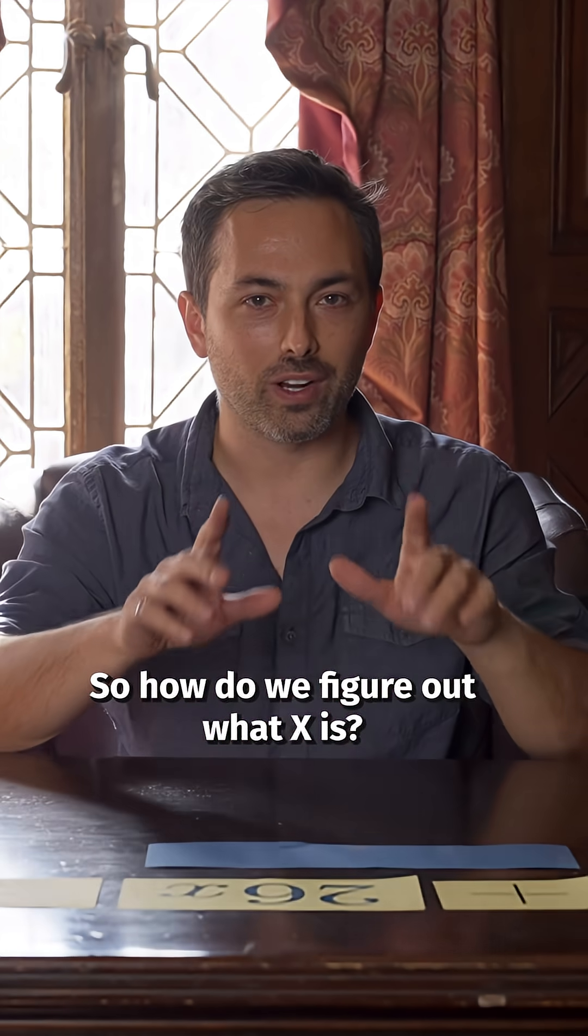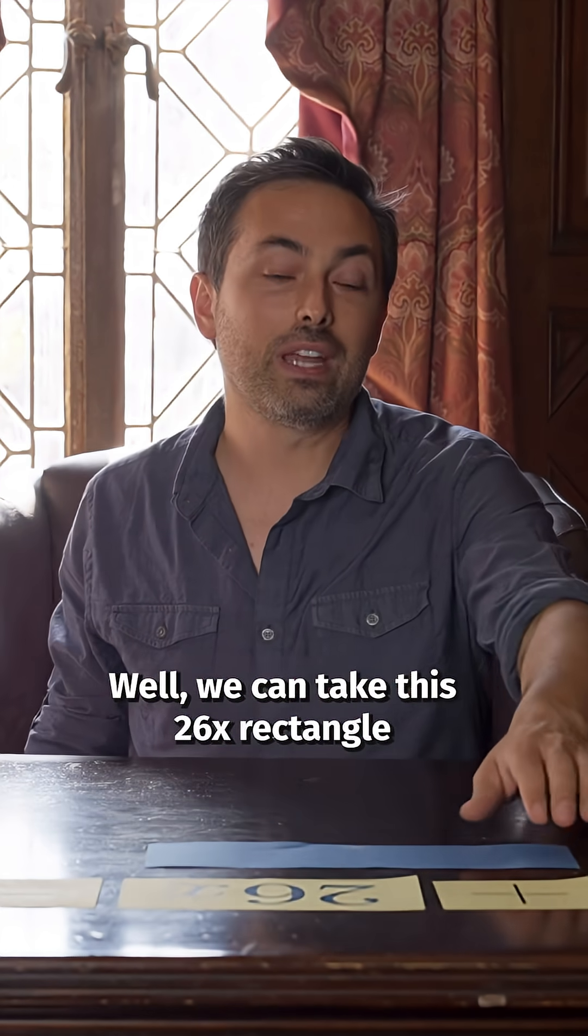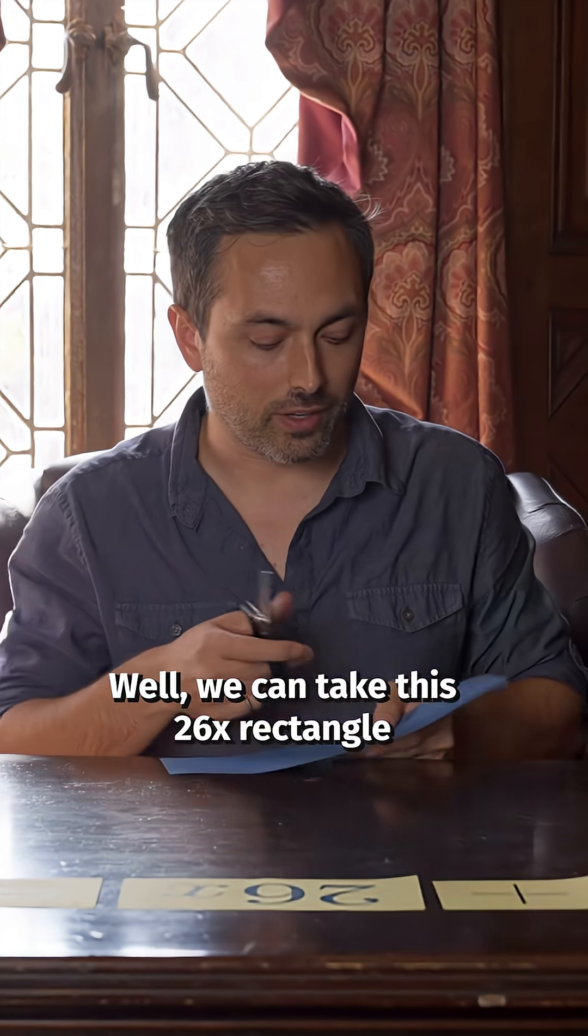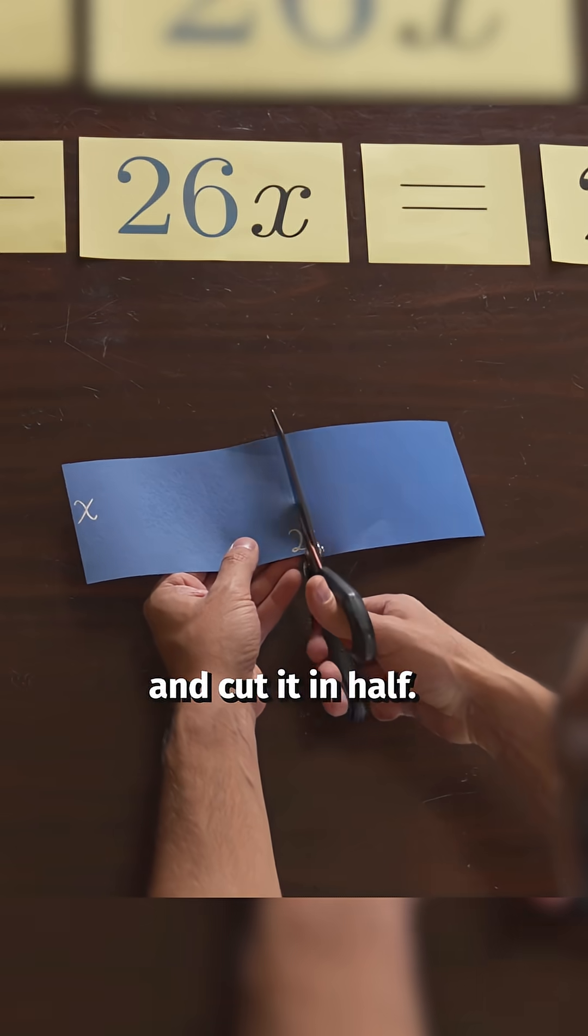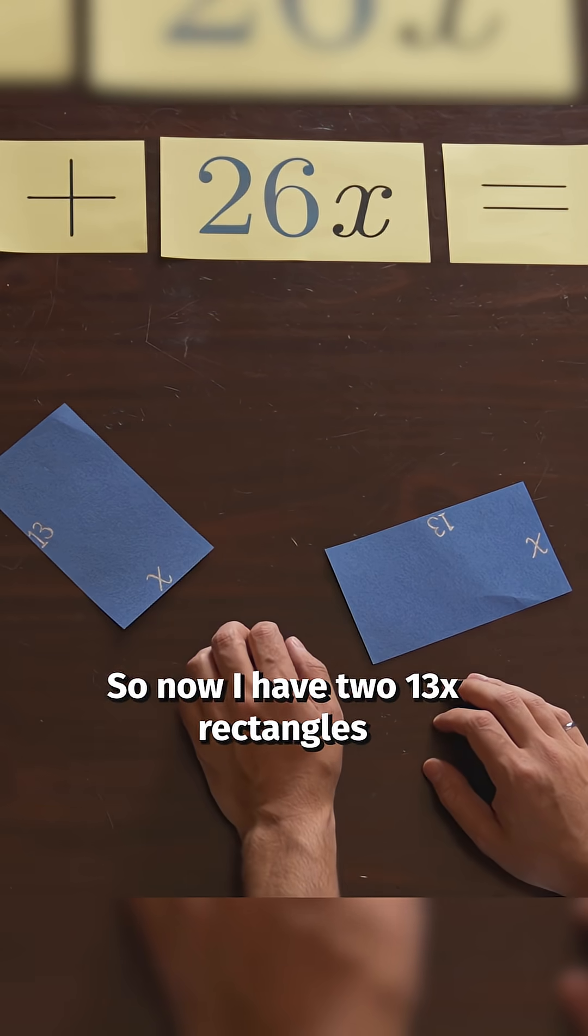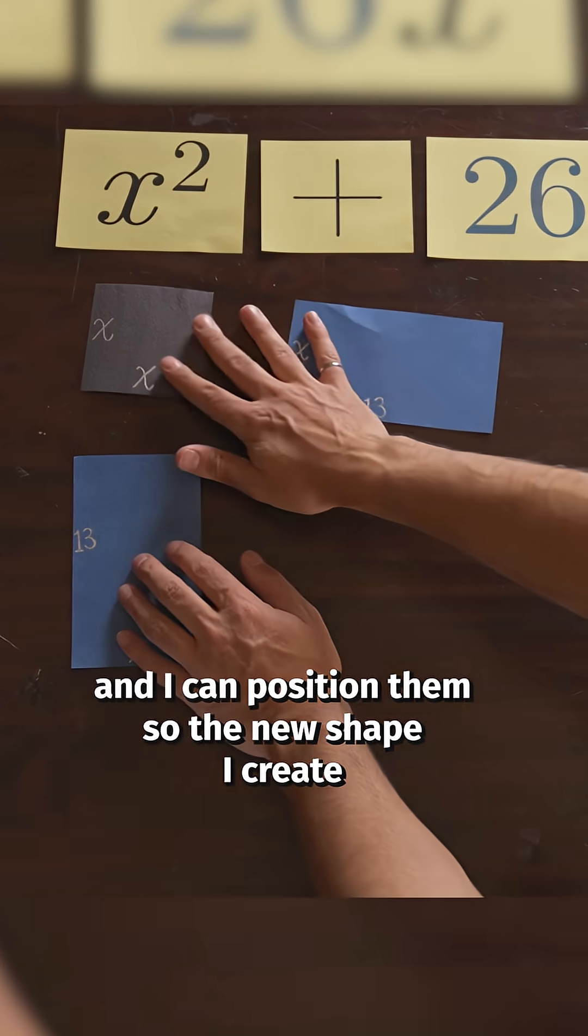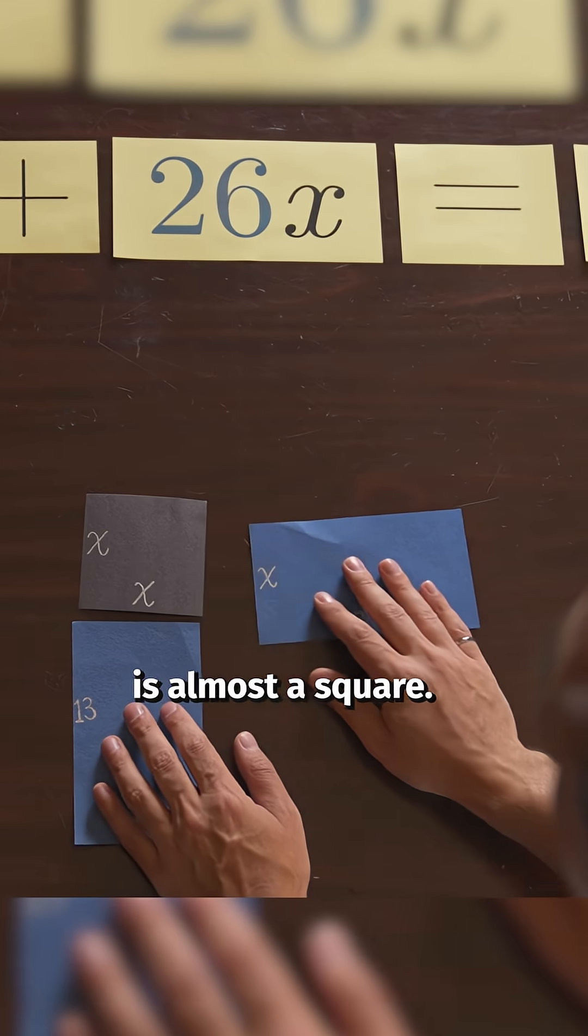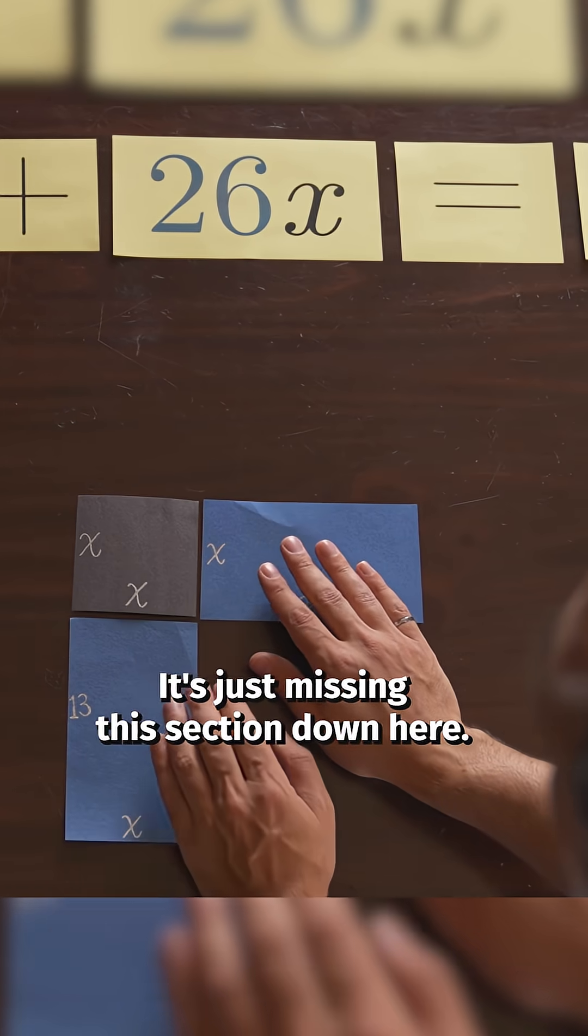So how do we figure out what x is? Well we can take this 26x rectangle and cut it in half. So now I have two 13x rectangles and I can position them so the new shape I create is almost a square. It's just missing this section down here.